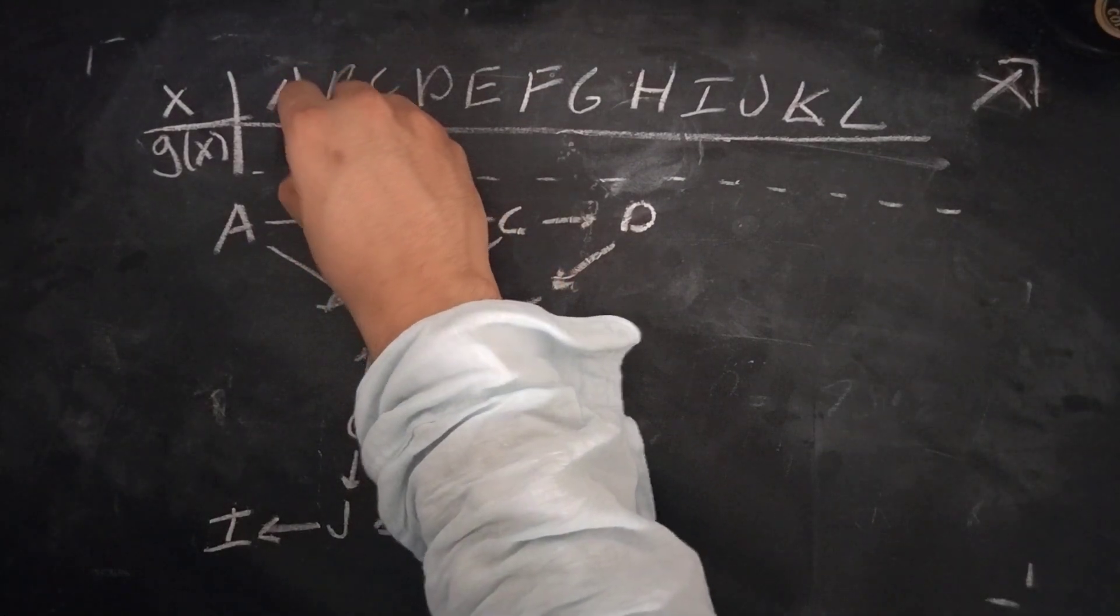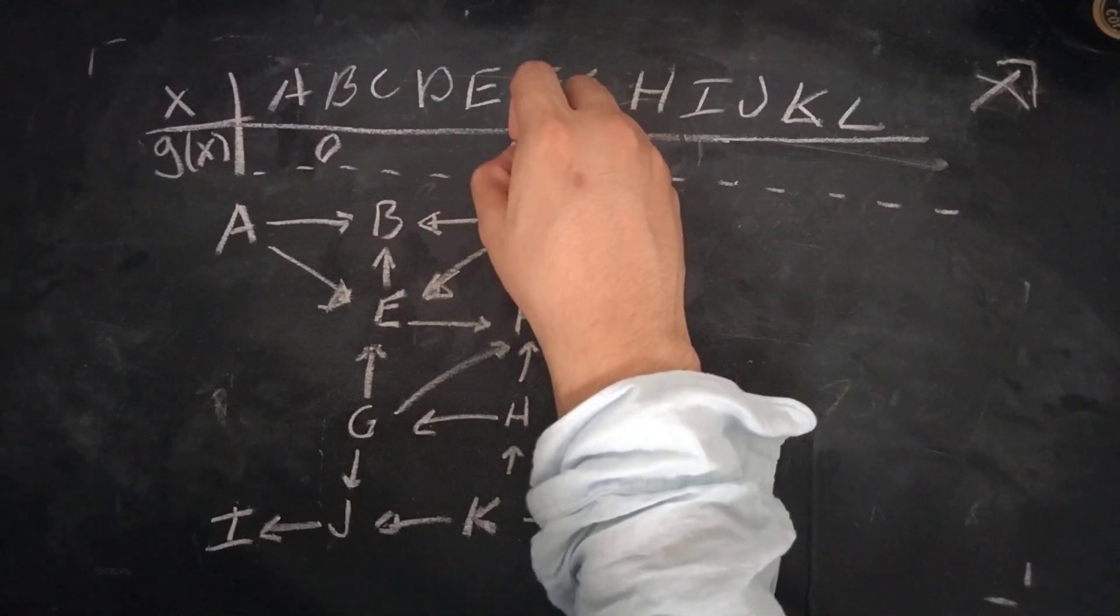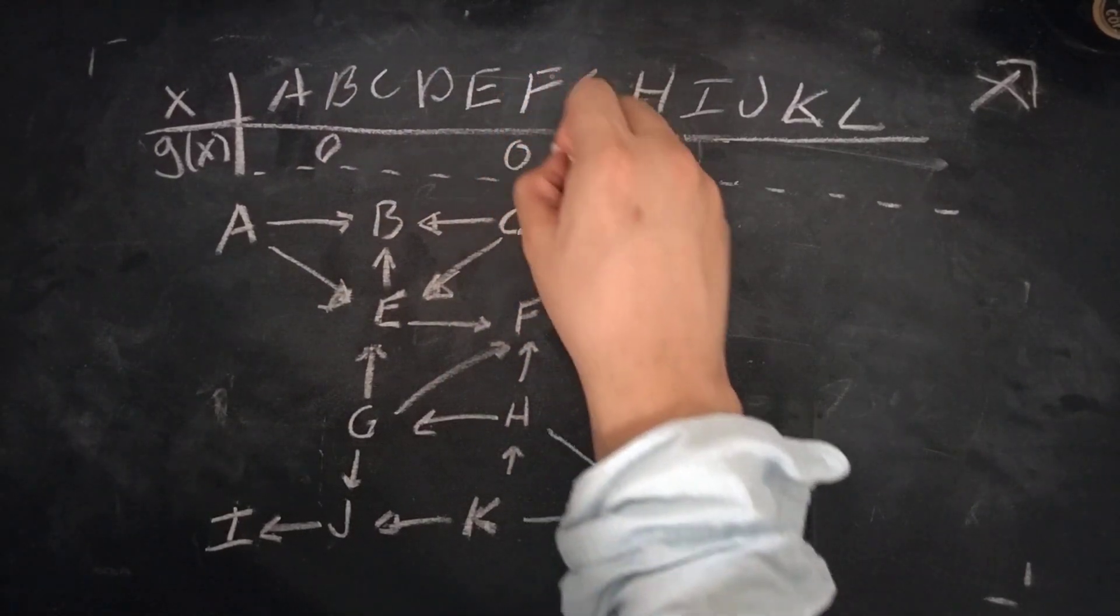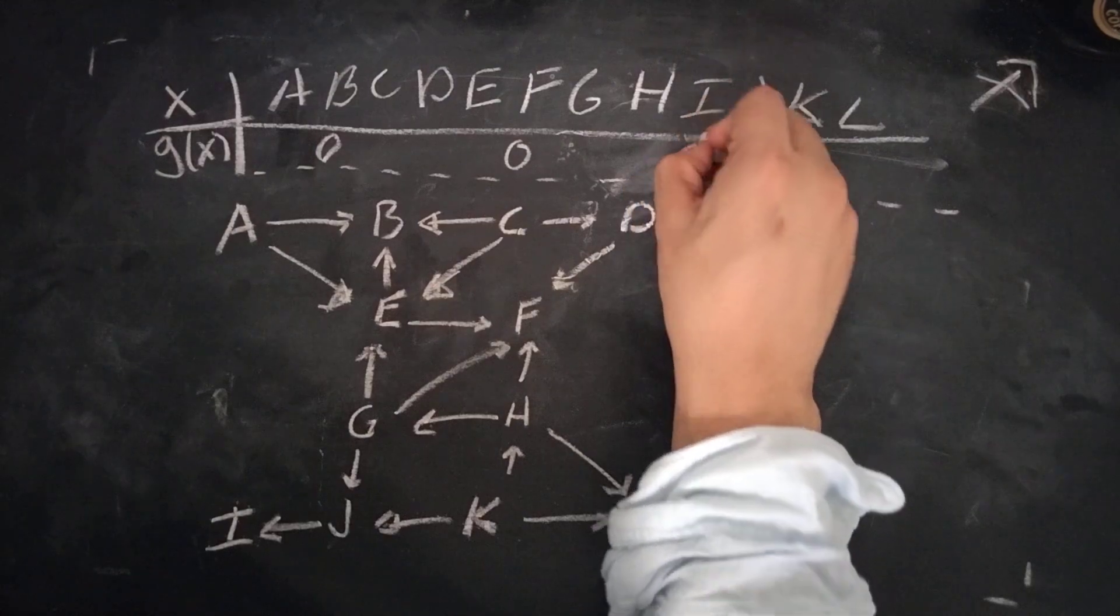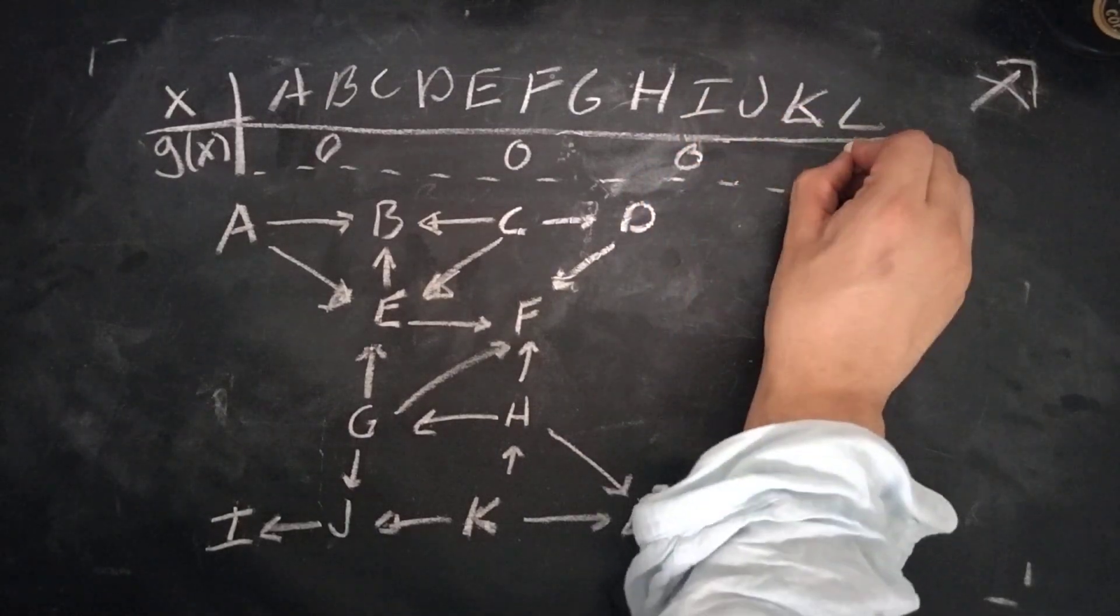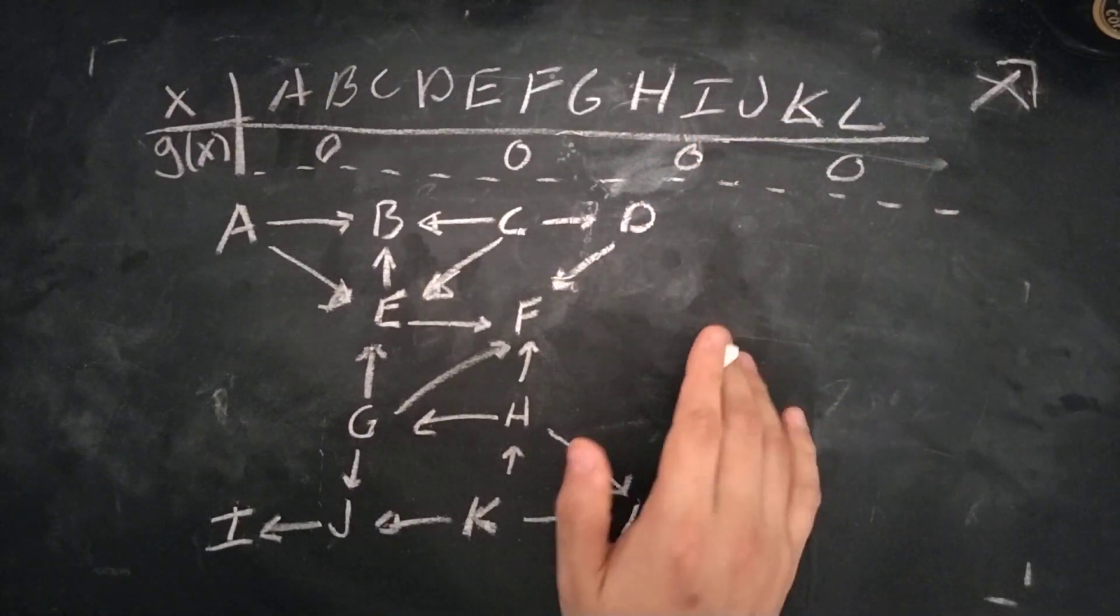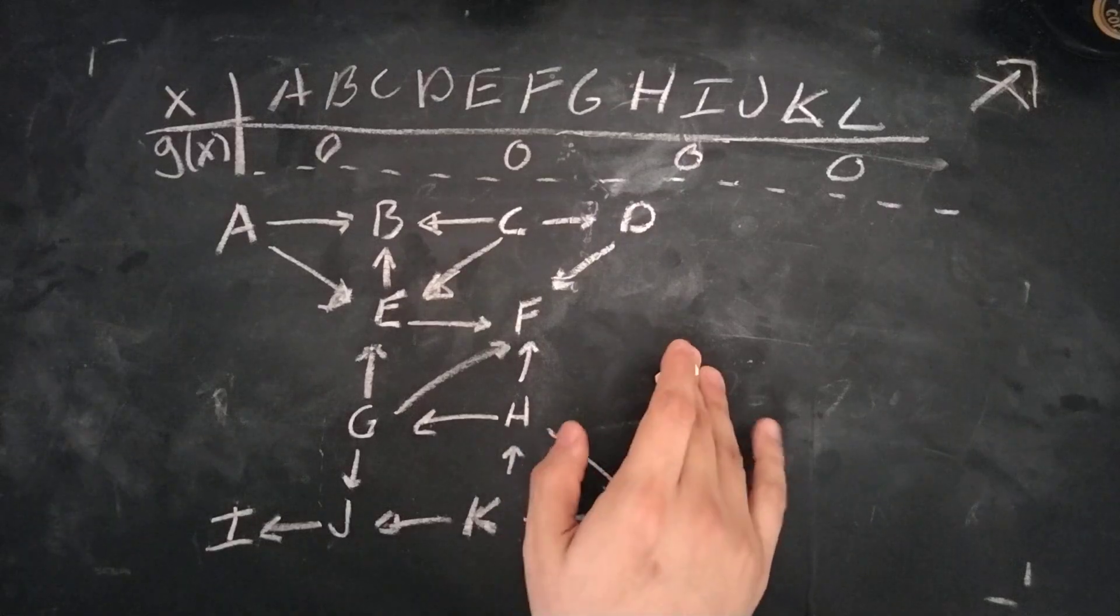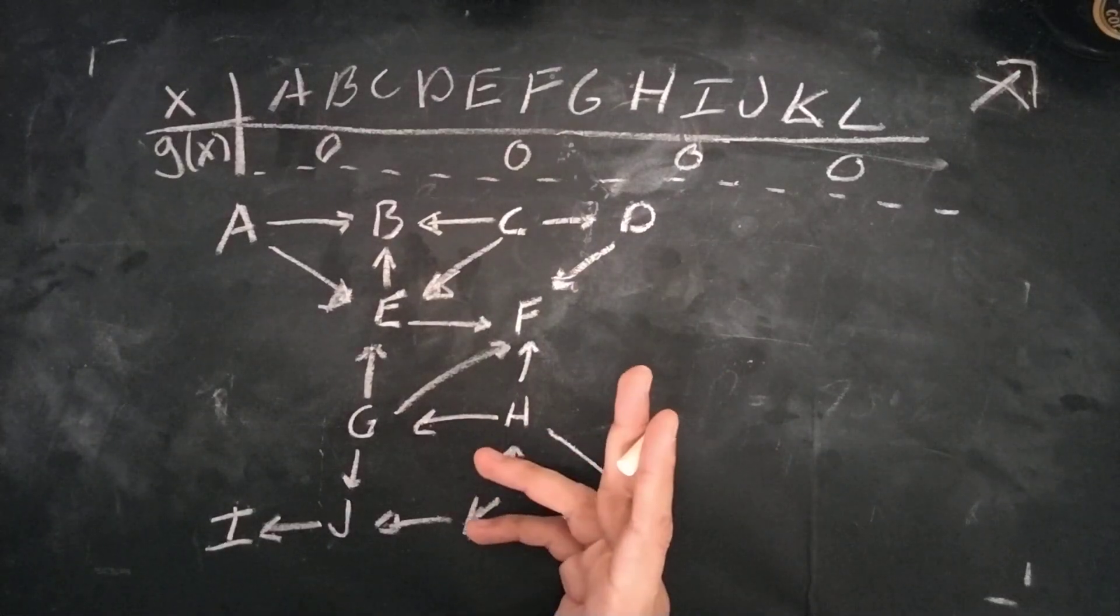So B is 0, F is 0, I is 0, and L is 0. So you have that. So what's next?